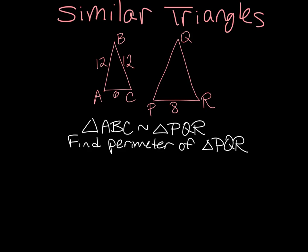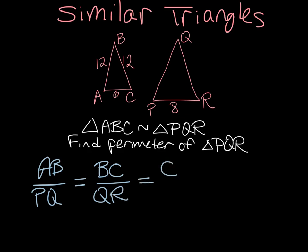We know that the sides of ABC are proportional to the sides of PQR. That means that AB over PQ is equal to BC over QR, and that's equal to CA over RP.